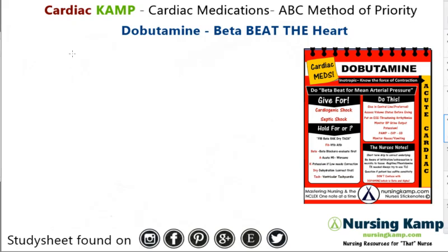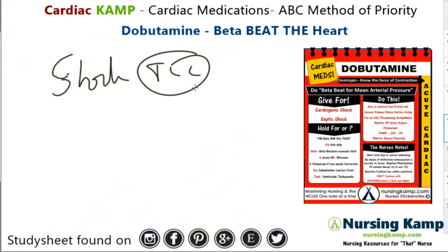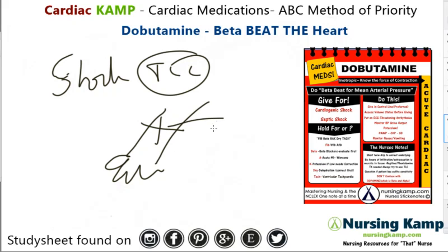It's given for cardiogenic shock — it's a shock med, generally given through a triple lumen and never given peripherally. The main reason you don't give it peripherally is because of infiltration. And if this medication infiltrates, they will lose their arm.